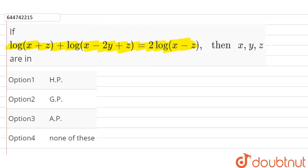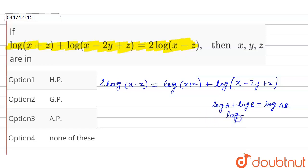First of all, we will write down the equation that is 2 log x minus z is equal to log of x plus z plus log of x minus 2y plus z. And we know that the property of log that is log a plus log b is equal to log ab and log a to the power m is equal to m log a.